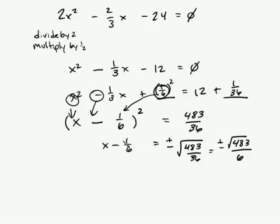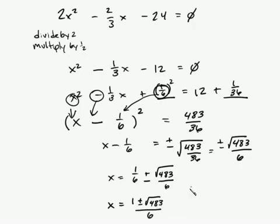So now you add 1 sixth to both sides. You get x equals 1 sixth plus or minus the square root of 483 over 6.